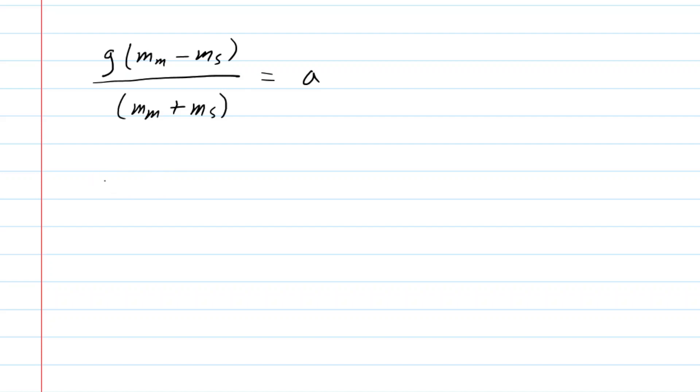So we'll plug in the known values. Of course, g is 9.8 meters per second squared. We have the mass of the man, which was 85 kilograms. And the mass of the sandbag, which was 65 kilograms. And when you solve this, you will get an acceleration of approximately 1.31 meters per second squared. So this is the acceleration of the man as he accelerates downward.